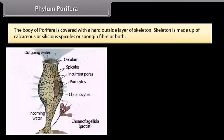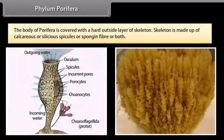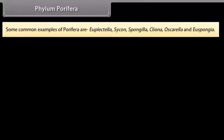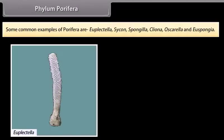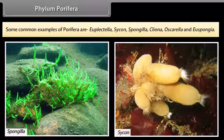The body of Porifera is covered with a hard outside layer of skeleton. Skeleton is made up of calcareous or siliceous spicules, or sponge fibers, or both. The body design has very minimal differentiation and division into tissues. They are multicellular, diploblastic, and radially or asymmetrical animals. Some common examples of Porifera are Euplectella, Sycon, Spongilla, Cliona, Oscarella, and Euspongia.